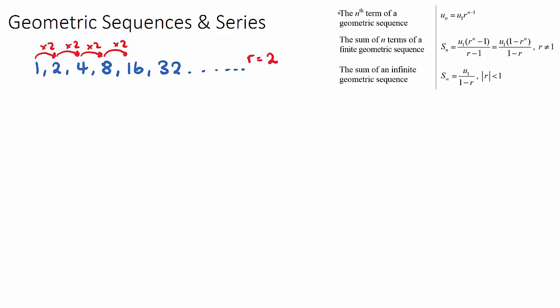There are some IB formulas they give us that help us find any term in a geometric sequence, so we might be able to find the 10th term without having to use our hands. We can use the formula and also sum up some of the terms. What I want to do is show you a few examples of sequences with ratios. This is a sequence here with a ratio of 2.